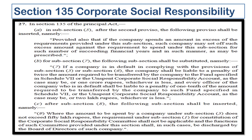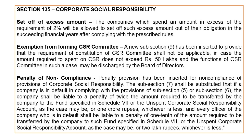Moving forward to the amendment in section 135 on Corporate Social Responsibility under Companies Amendment Act 2020: a proviso has been inserted after sub-section 5, sub-section 7 has been totally substituted, and another sub-section has been inserted after sub-section 8. The explanation covers three important changes.